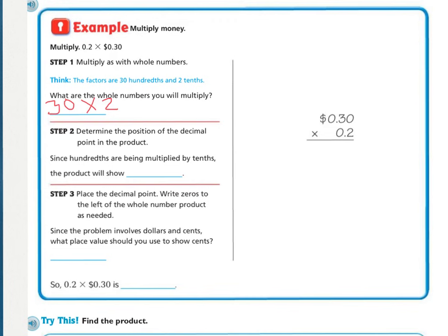Step two is to determine the position of the decimal in the product. Since hundredths are being multiplied by tenths, hundredths have two decimal places and tenths have one. You add those together, giving you three decimal places. So the place value with three decimal places is thousandths.